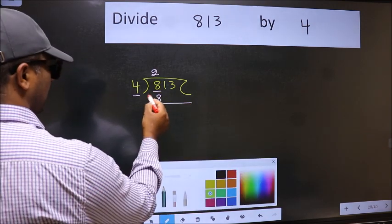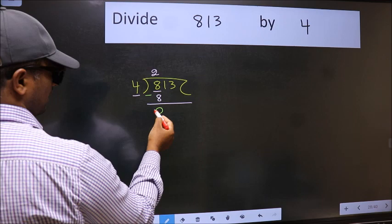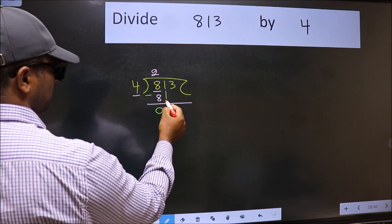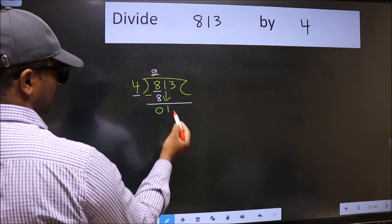Now we should subtract. We get 0. After this bring down the beside number. So 1 down.